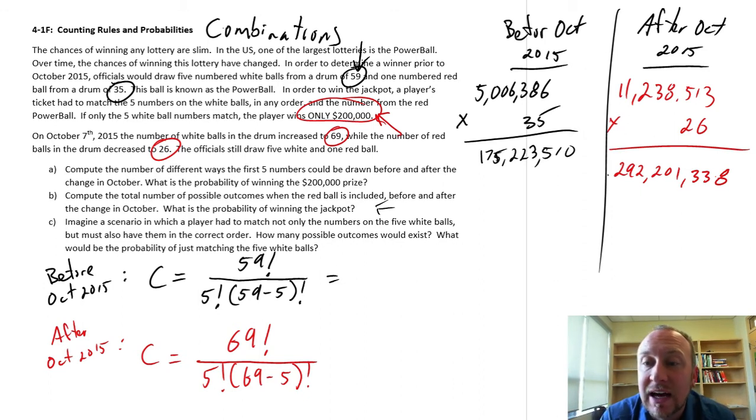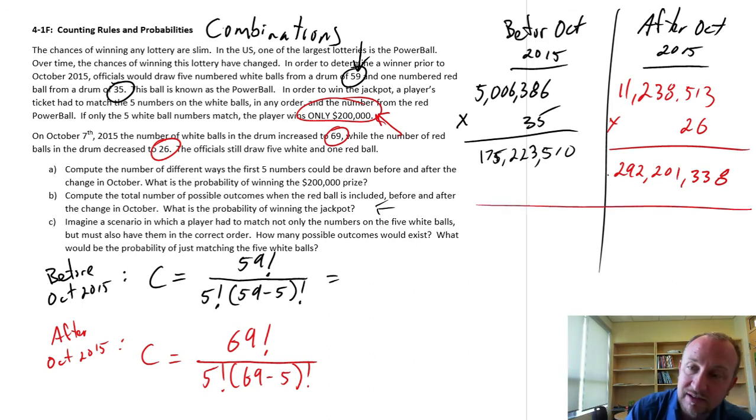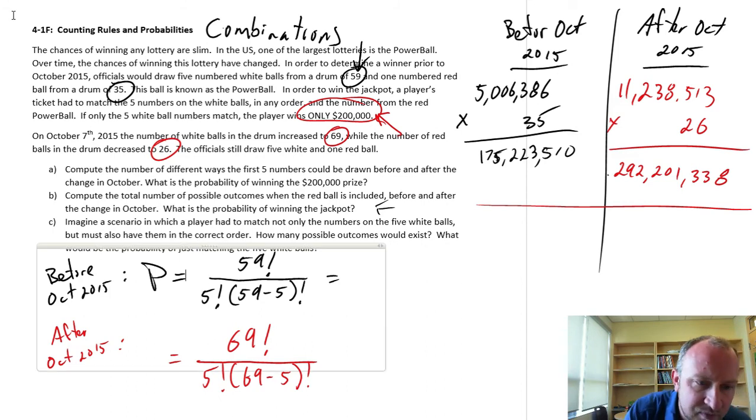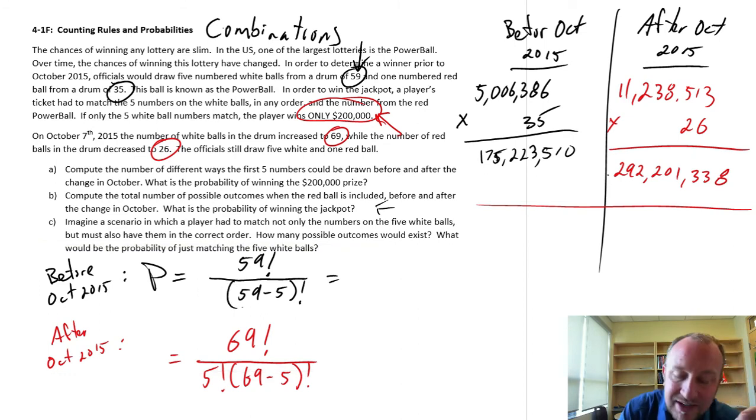So now we're looking at what are the different permutations of those five white balls? So if we were to consider the permutations, all I'm going to do, I'm just going to tweak these formulas a little bit, because the calculations are similar. So here now, this is going to be permutations. All I need to do is eliminate this five, because we're no longer adjusting for the order, because now in this fictional scenario, order matters.